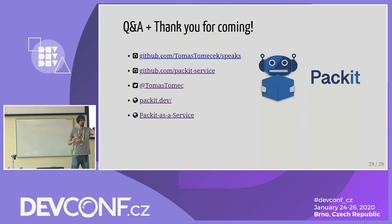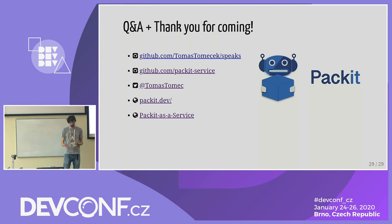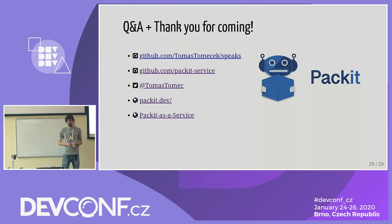Q&A: Is it possible to do different actions based on the branch — for example on master I want to build and test, but when I push a tag I want to do something else? Right now Packit reacts to all pull requests in CI mode, and the 'deploy to Fedora' / 'push new upstream release to Fedora' workflow only works with tags or GitHub releases. It's not configurable at the moment, but if you have an idea about how it should work for you, please create an issue and we can talk.